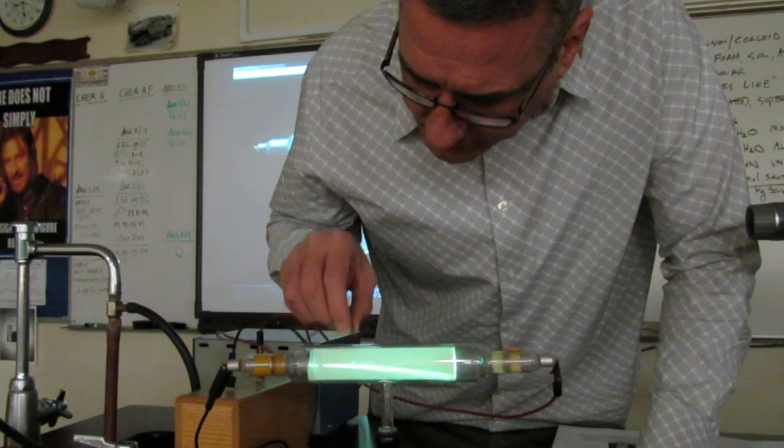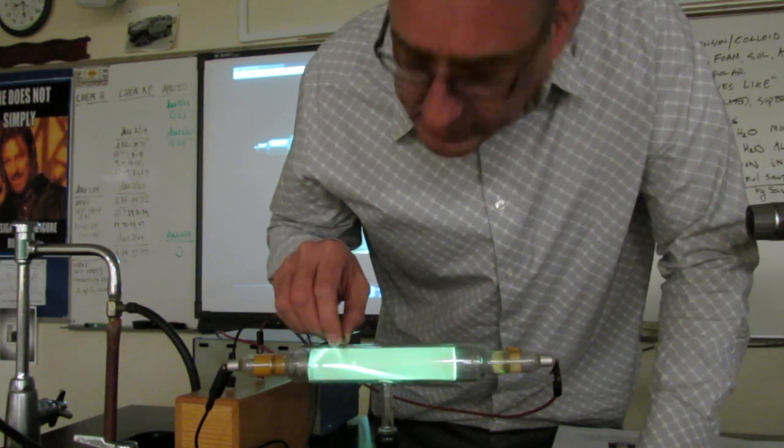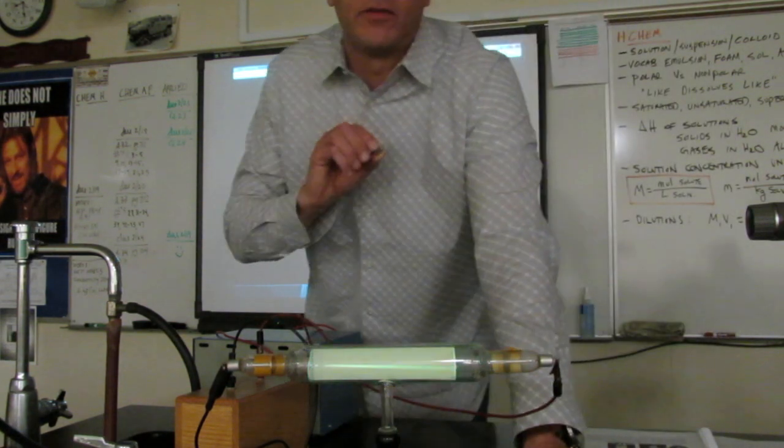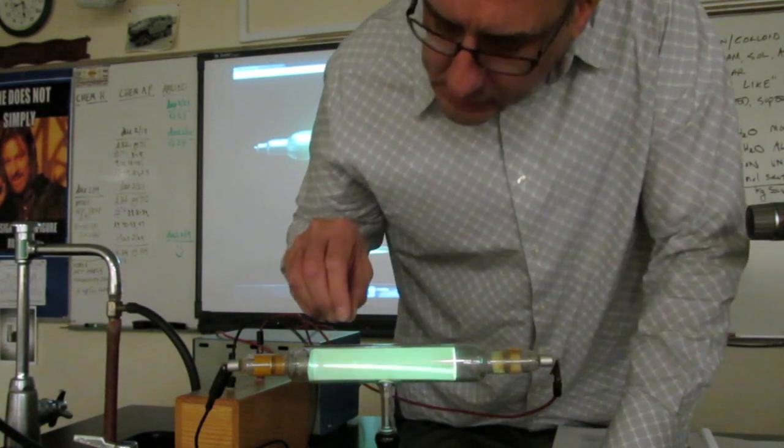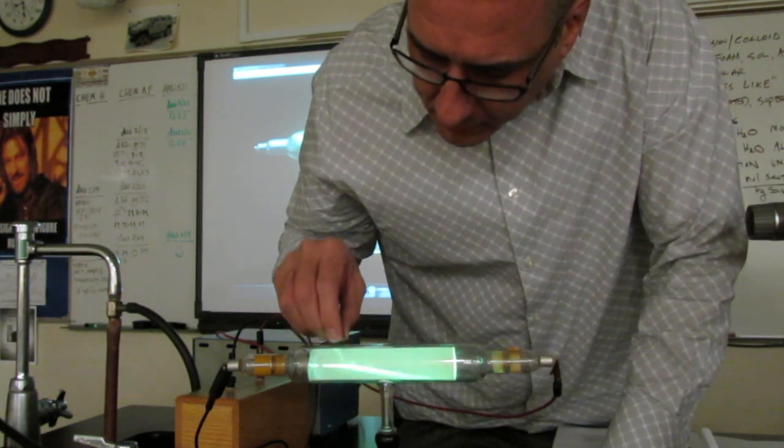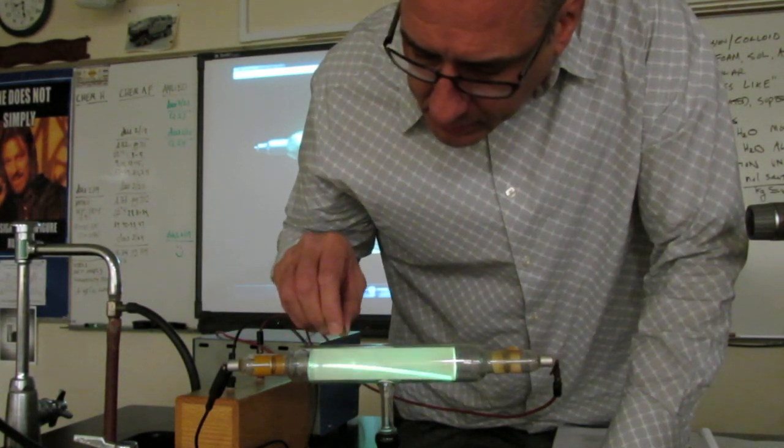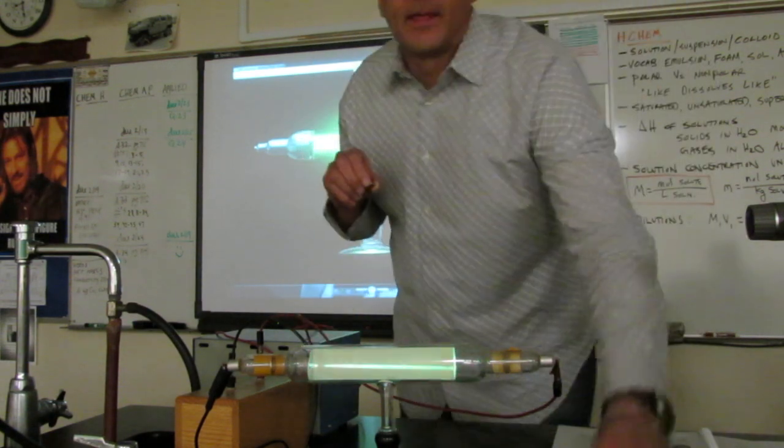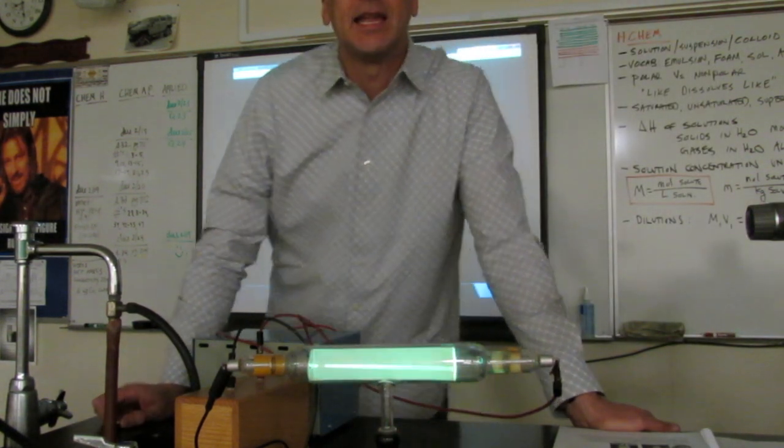It turns out that the end that's repelling, this right here, is the negative pole of the magnet. And of course, like charges repel, so he determined that the charge of those rays were negative, carried a negative charge.